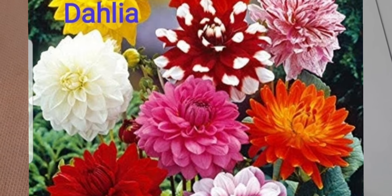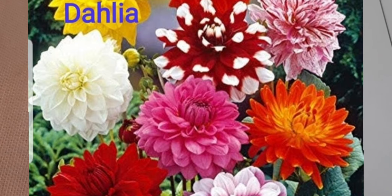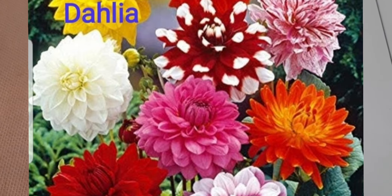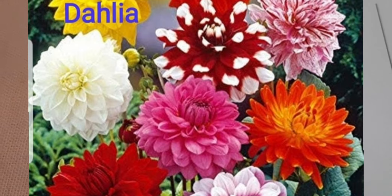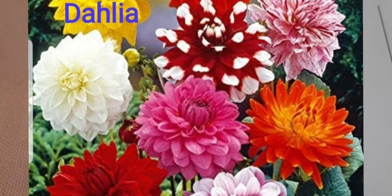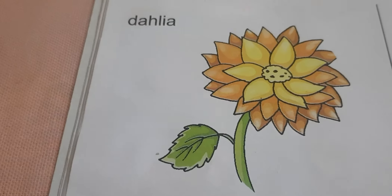Dahlia bahut bade bade flowers hote hain aur bahut alag alag colors mein aate hain. Aur jab garden mein lagi hoti hain to dahlia bahut achhe lagte hain. (Dahlia has very big flowers and comes in many different colors. When planted in the garden, dahlias look very beautiful.)